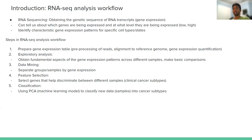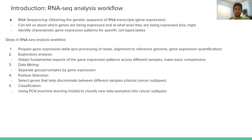Gene expression quantification leads us to different types of analysis. First, there's exploratory analysis, which is getting the fundamental aspects of the patterns, understanding them across different samples, and making basic comparisons. Data mining is how we can separate groups of samples by gene expression based on the variety of genes that exist. Using machine learning tools, we can do feature selection — selecting genes that are very important in discriminating between different cell samples. In this course, we looked at how genes could help differentiate between different clinical subtypes of cancer.